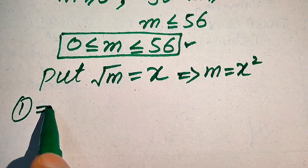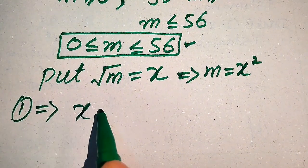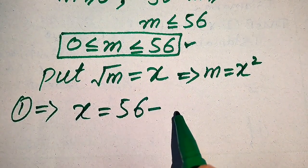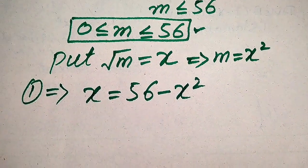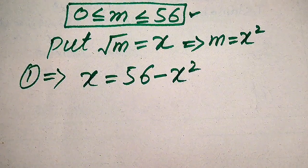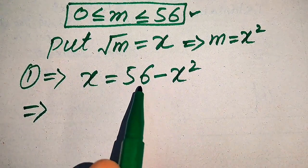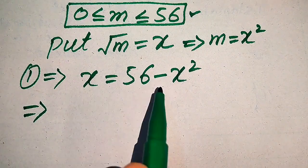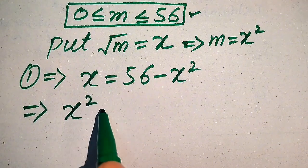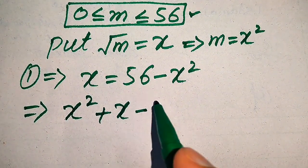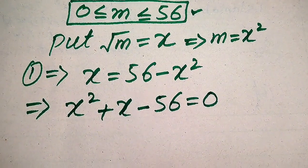In equation 1 we replace square root of m with x and m with x squared, giving us x equals 56 minus x squared. This is a quadratic equation but not in standard form, so we move both terms to the left hand side: x squared plus x minus 56 equals 0.